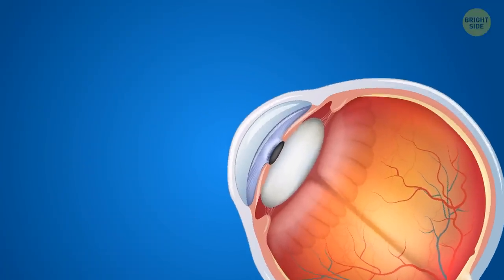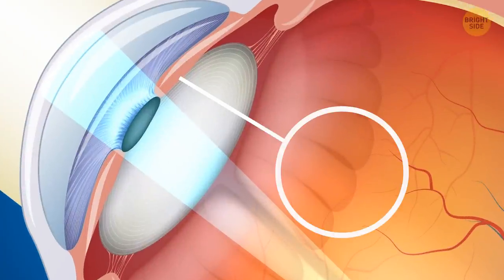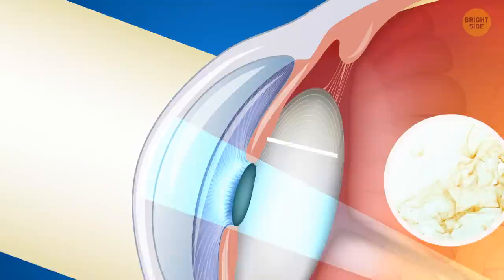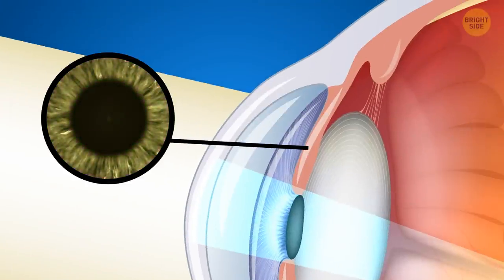Melanin protects your eyes from the sun. Almost all people have dark brown or yellow pigment in the back layer of the iris. But it's the front layer that's responsible for your eye color, and the amount of melanin there determines it.